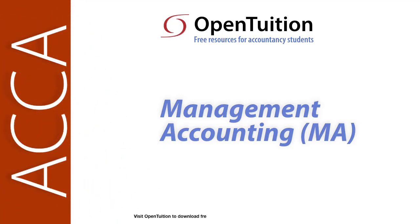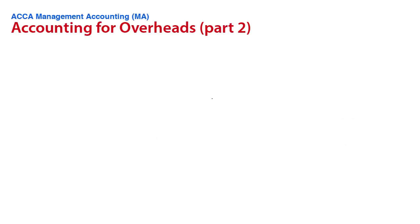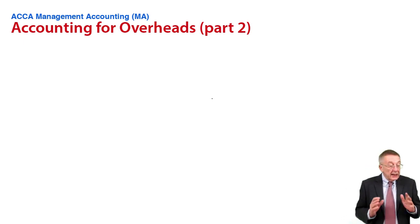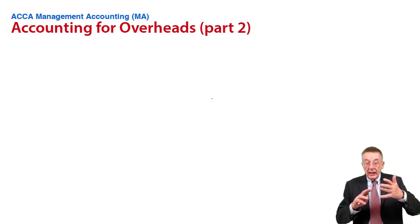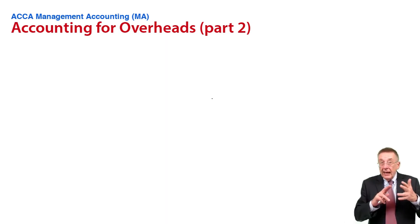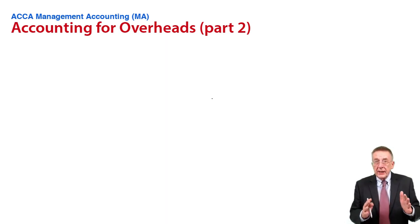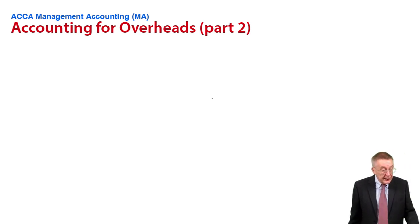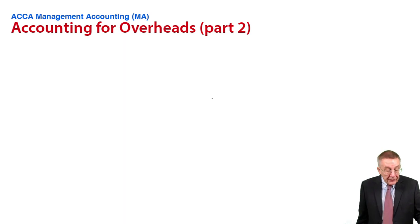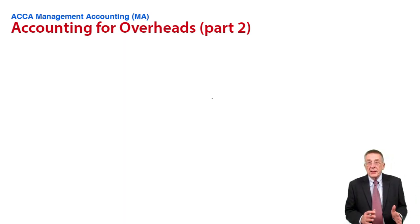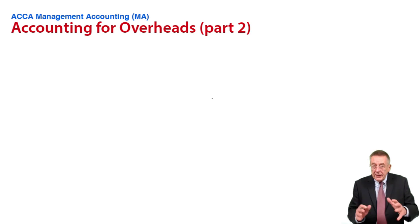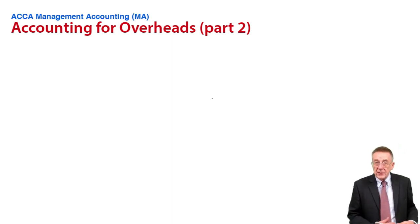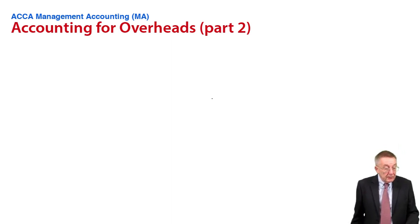This is a lecture from Open Tuition. To benefit from the lecture, you should download the free lecture notes from opentuition.com. We're still on chapter eight, which is accounting for overheads. In the last lecture, I went through absorbing the overheads and allocating and apportioning the overheads with more than one department. And if you look now at example four, there's a fuller exercise here of allocating and apportioning, which we need to do before we can start getting an absorption rate.